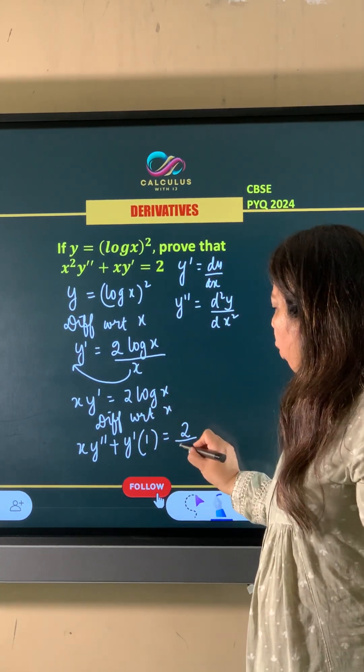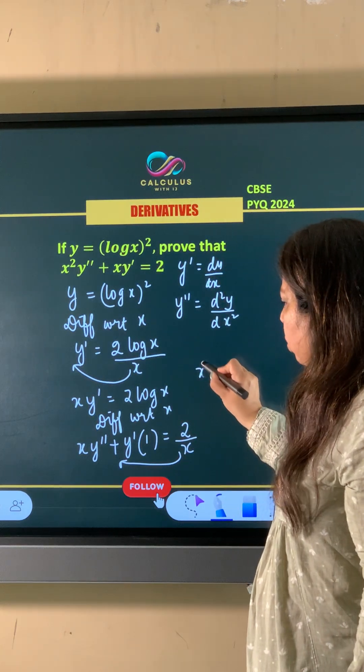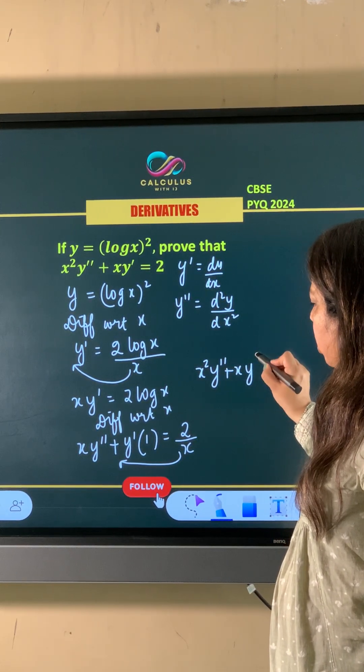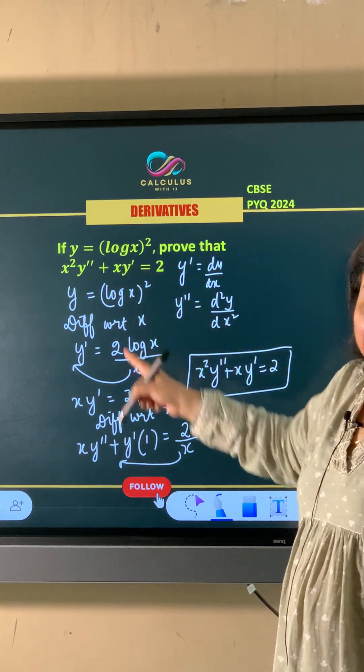To, 2 into derivative of log X is 1 upon X. Now, we take X to other side, so X square Y double dash plus XY dash is equal to 2 which is the required answer.